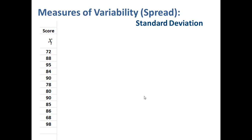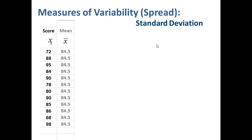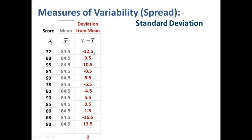The next measure of variability is the standard deviation. The standard deviation shows the average deviation of the individual values in the data set from the mean. Recall that the mean for this set of data was 84.5. The first step to calculate the standard deviation is to find the difference between each data value and the mean. The first value is negative because 72 is 12.5 units below the mean of 84.5, whereas 88 has a positive value because it's above the mean. If we sum up all the deviations from the mean, we should expect to get a sum of zero, since the mean is the balance point.